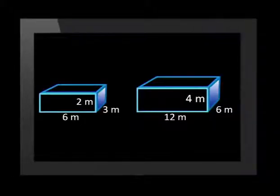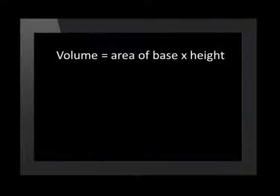Let's see what happens to the volume of the solid if we double each dimension of the rectangular prism. Each side has been multiplied by 2, giving us 4 meters, 6 meters and 12 meters.